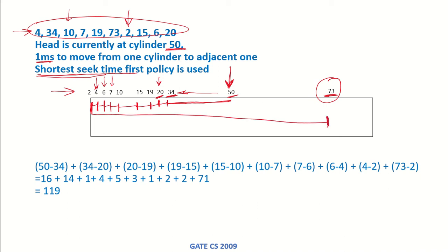So if we look at the cylinders travelled, that would be 50 minus 34, then from 34 to 20, 20 to 19, 19 to 15 and so on. So this is the number of cylinders travelled which is 119. We also know that it takes 1 millisecond to move from one cylinder to the next one. So 119 cylinders are being travelled, so 119 milliseconds will be required. So this is the correct option, option B.